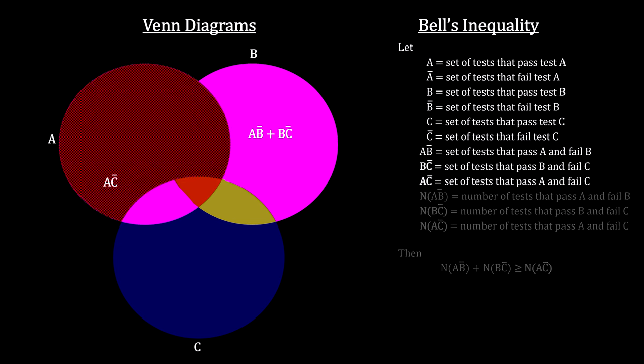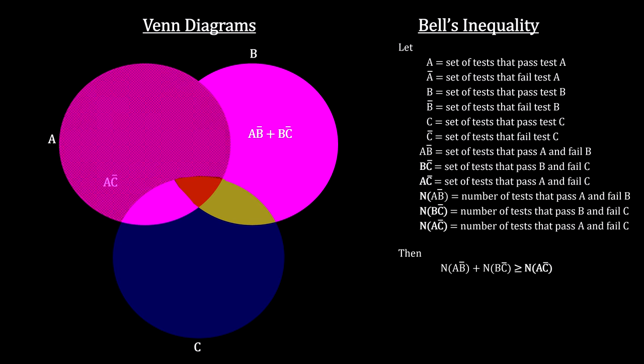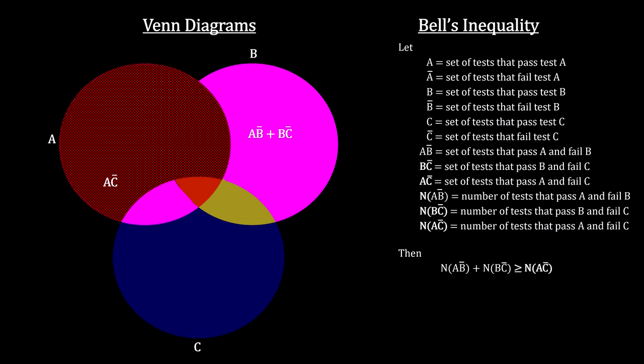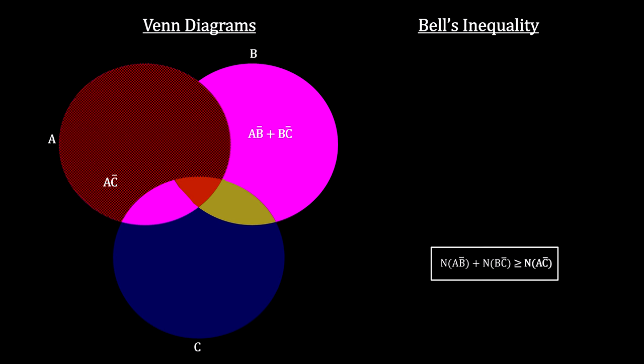From set theory, we know that the number in A-not-B plus the number in B-not-C must be greater or equal to the number in A-not-C. This is the famous Bell inequality.